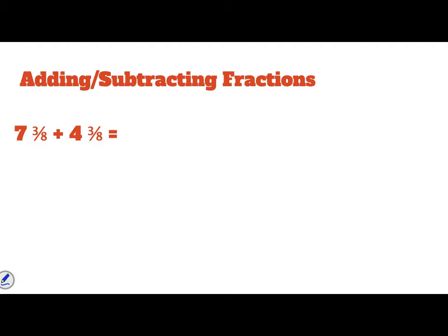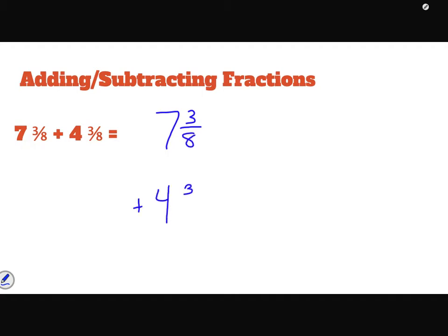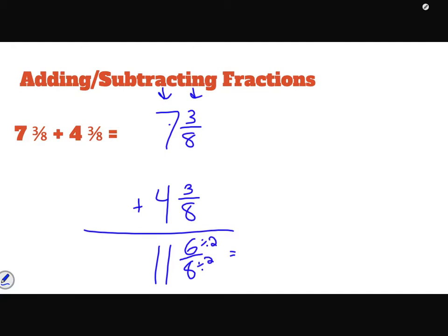Now we'll add and subtract fractions with like denominators. I rewrite the problem: seven and three-eighths plus four and three-eighths — two mixed numbers, each a combination of a whole number and a fraction. Since both have eighths, I can add them directly. Three-eighths plus three-eighths is six-eighths, and 7 plus 4 is 11, giving eleven and six-eighths. We can simplify six-eighths by dividing both by 2: six divided by 2 is 3, eight divided by 2 is 4. The final answer is eleven and three-fourths.